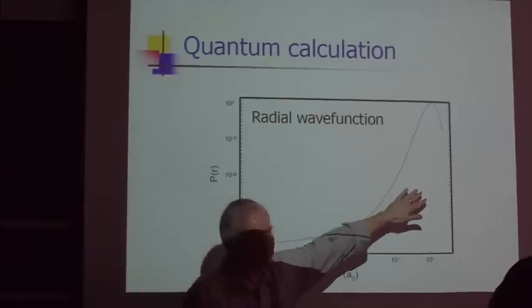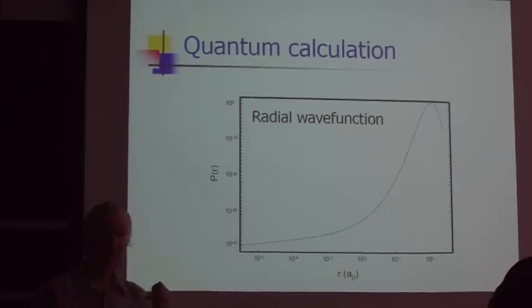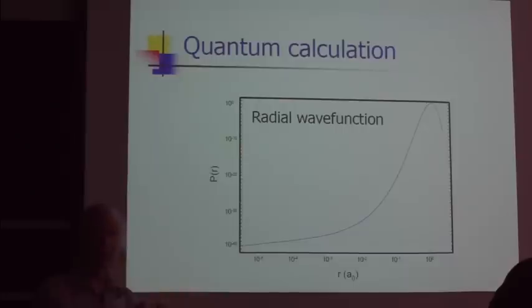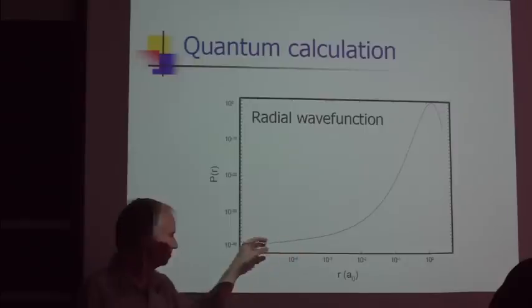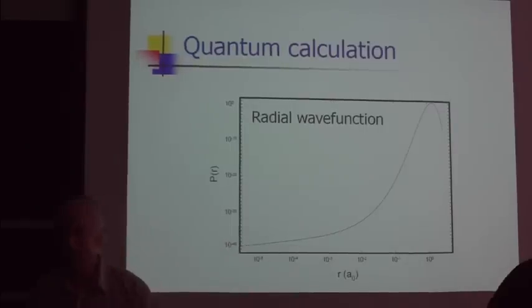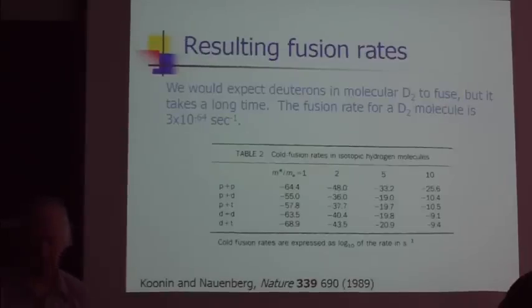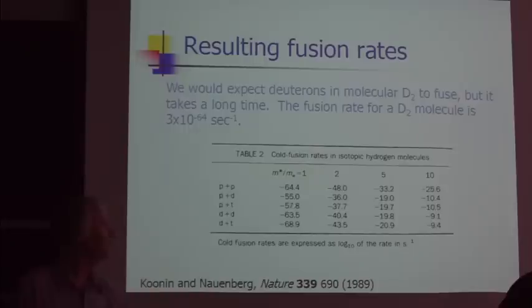The probability is highest when the deuterons are near equilibrium position, and the probability when the deuterons get very close is much lower. This tail here is basically the two deuterons tunneling through the Coulomb barrier in a molecular deuterium. And from such calculation, you can calculate the expected fusion rates.